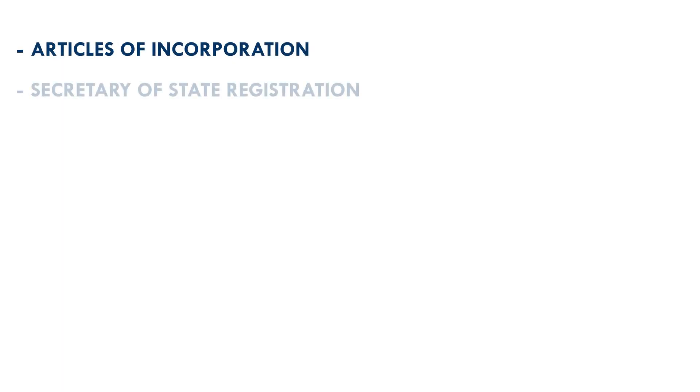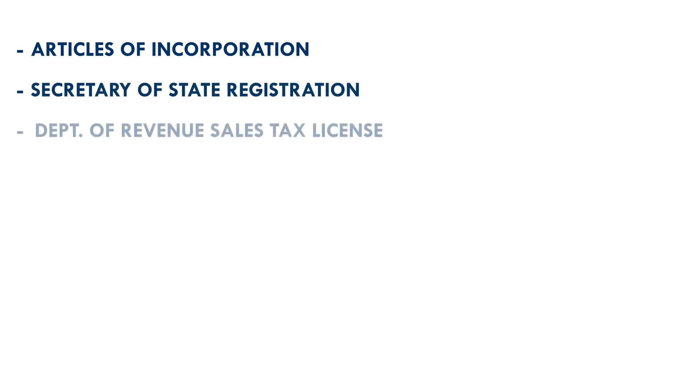We'd like to share a few tips as you look at completing your grant application. Here is everything you're going to need. First, you're going to need your Articles of Incorporation, also your Secretary of State Registration and your Department of Revenue Sales Tax License.